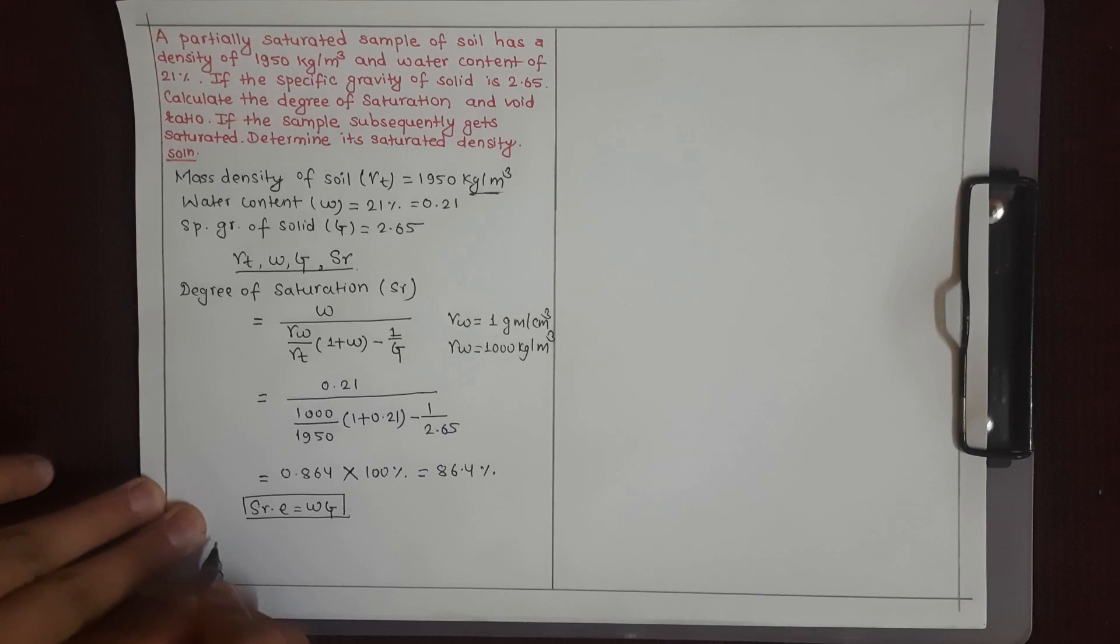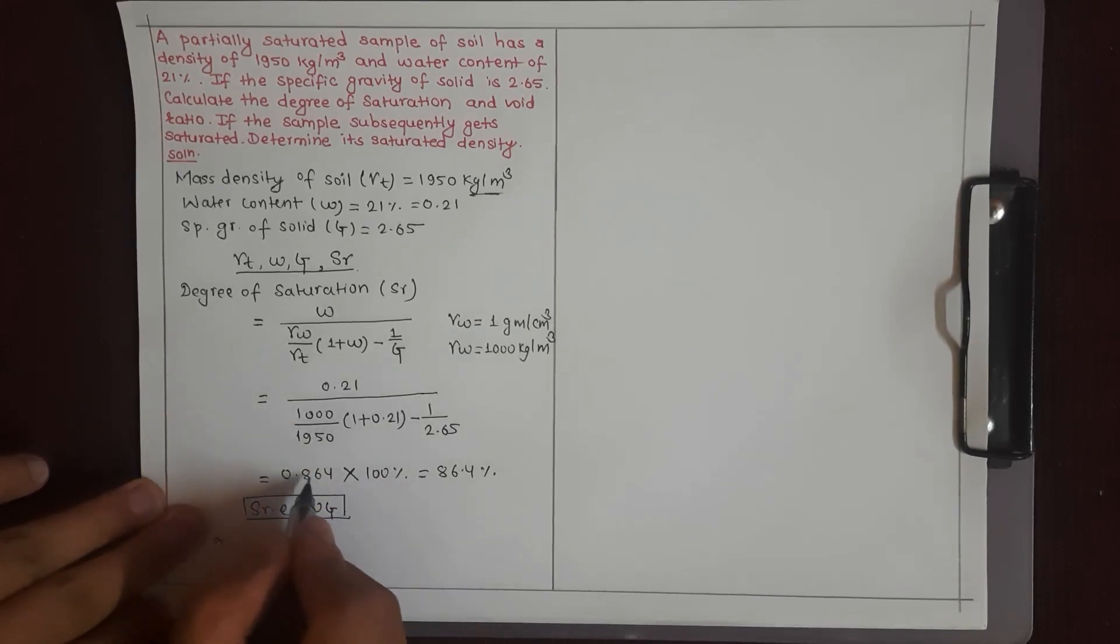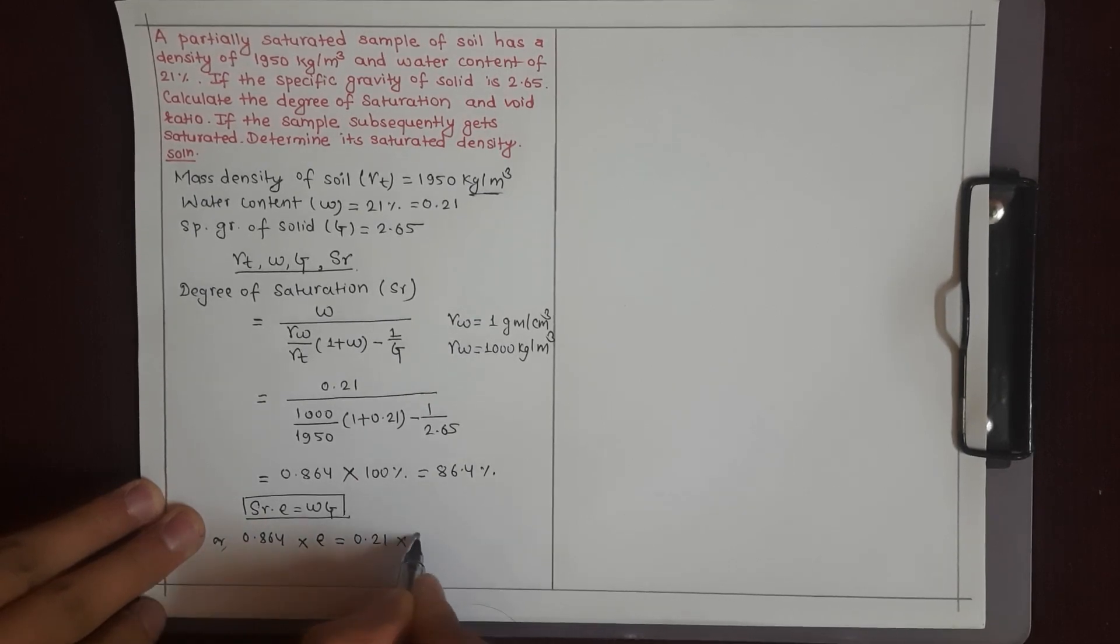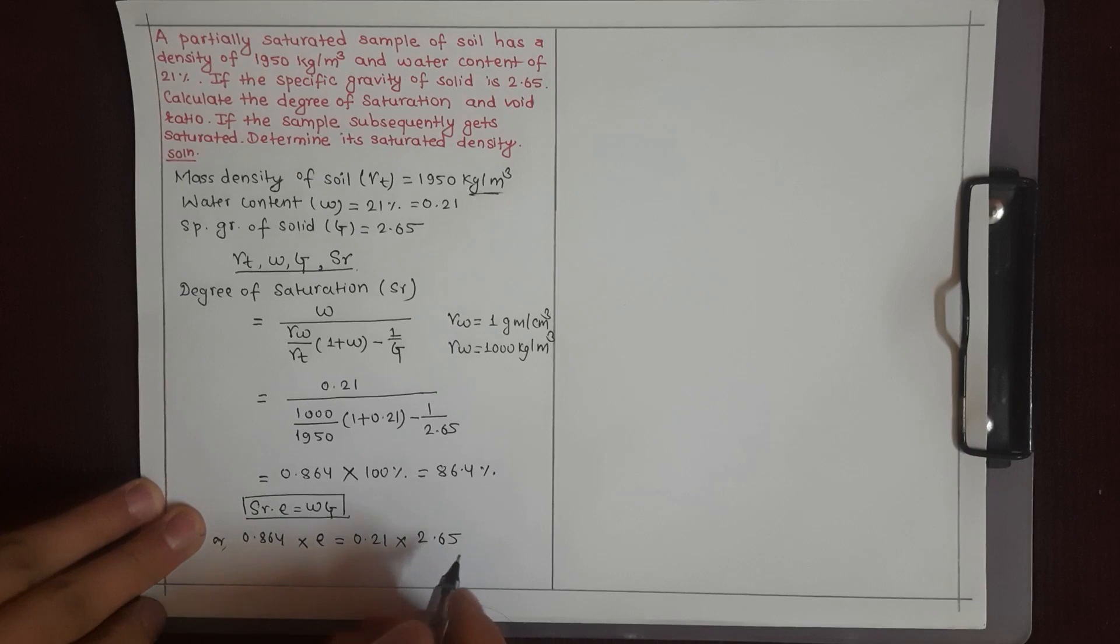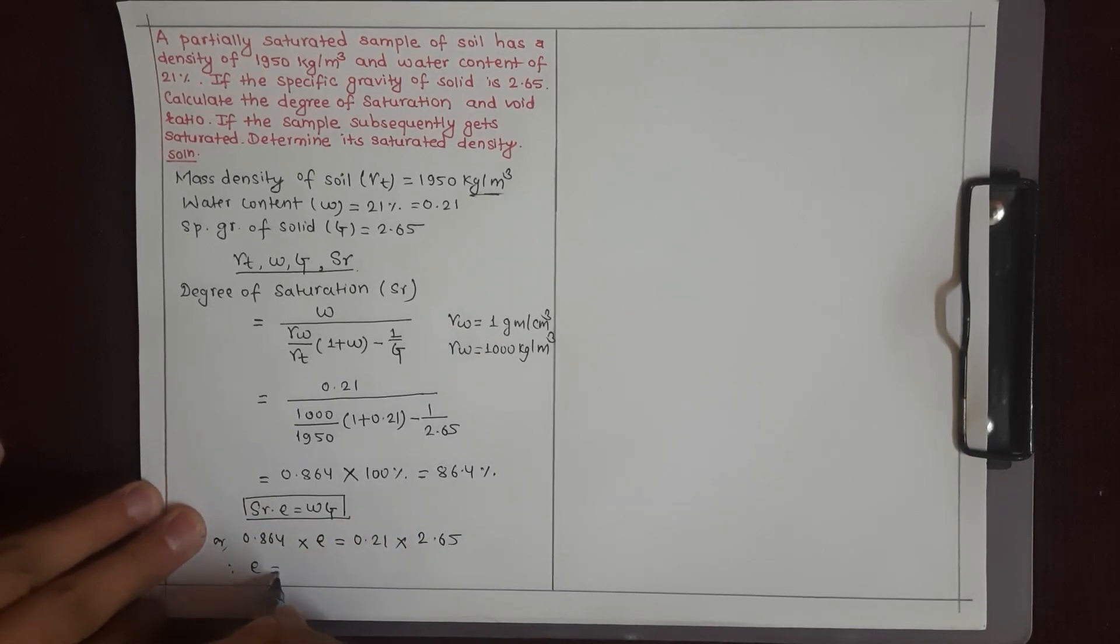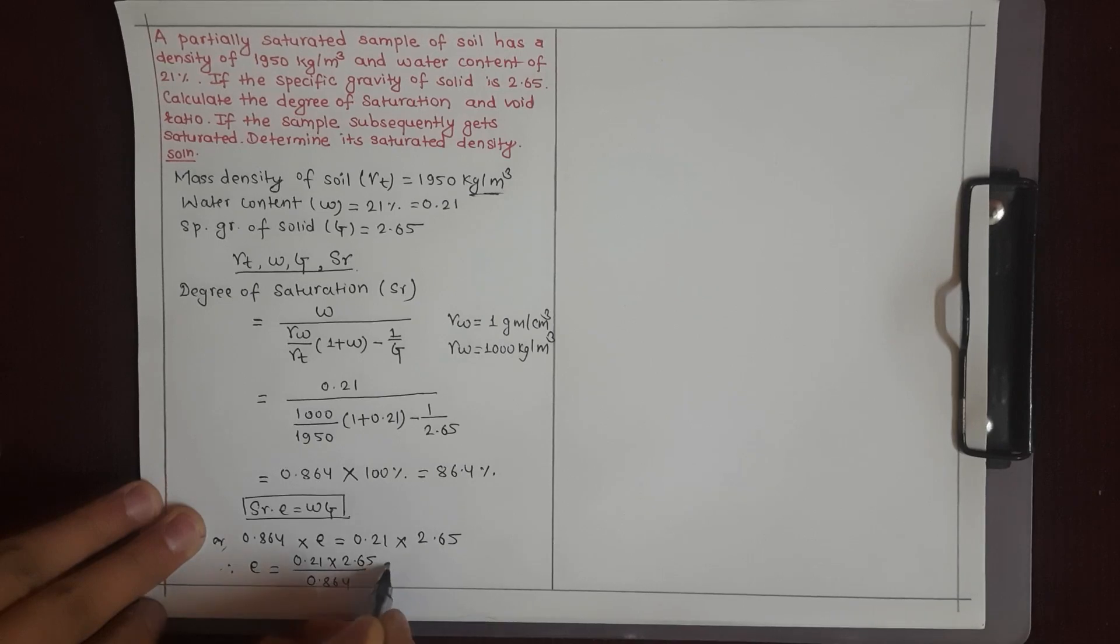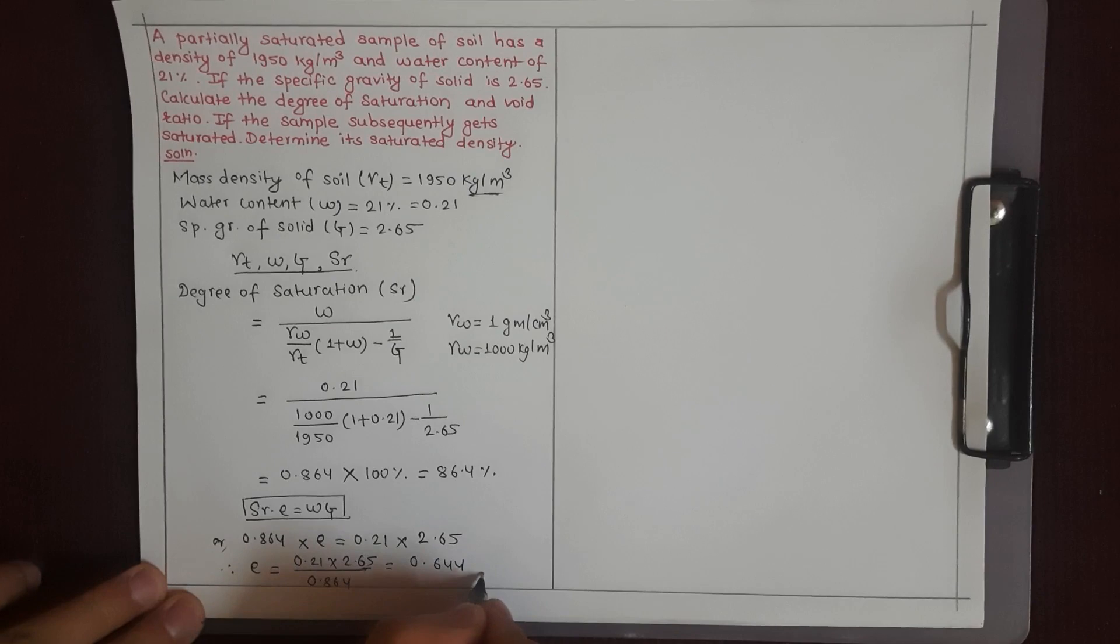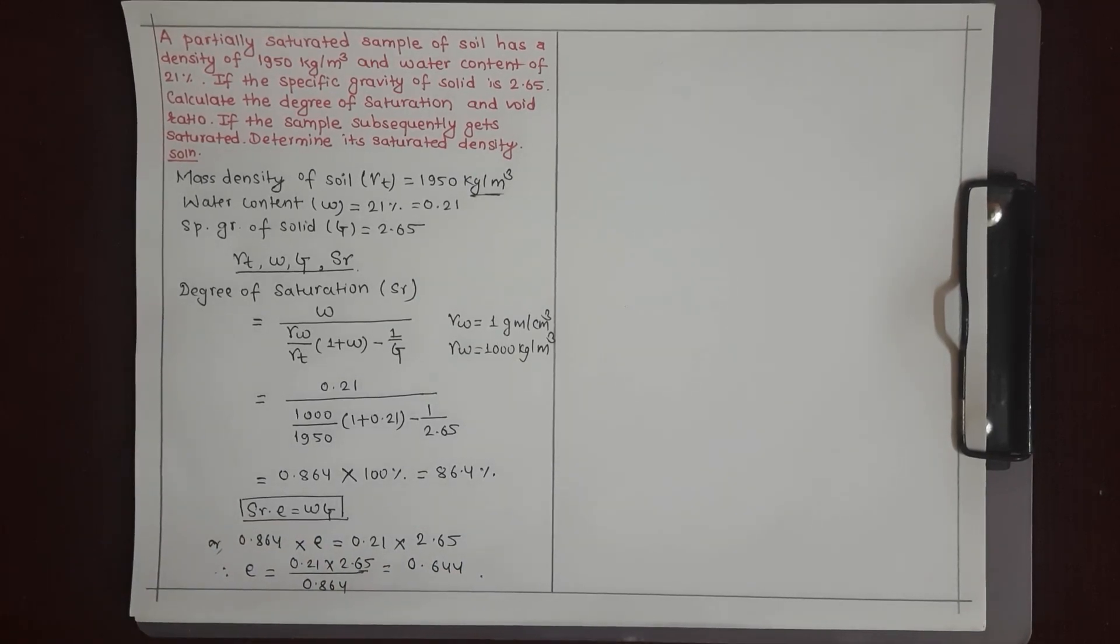SR equals 0.864 times void ratio e. Solving for e: water content 0.21 times specific gravity 2.65 divided by 0.86 equals 0.644. The degree of saturation is 0.864 or 64.4 percent.